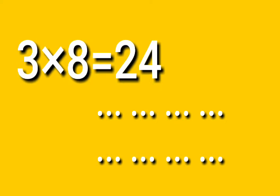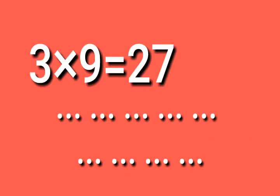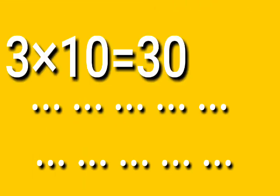Three, nines are twenty-seven. Three, ten are thirty. Number three. Number four.